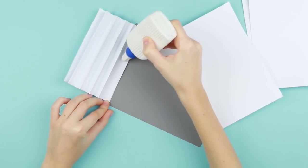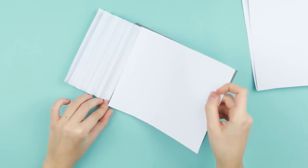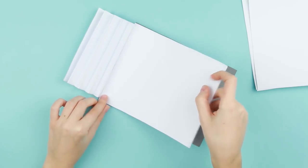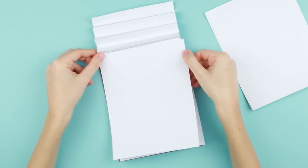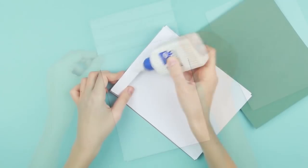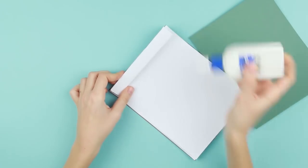Put the pages into the scrapbook sticking them to the pleats with the white glue. Finally, attach the front side.